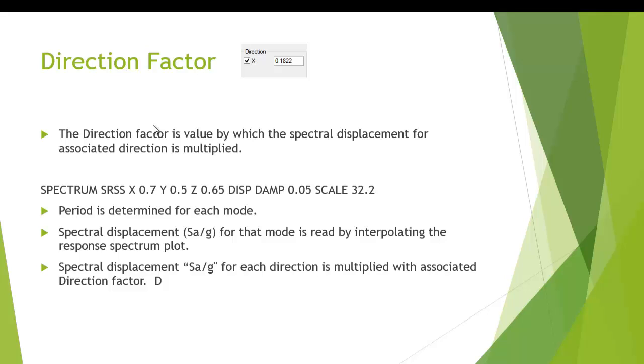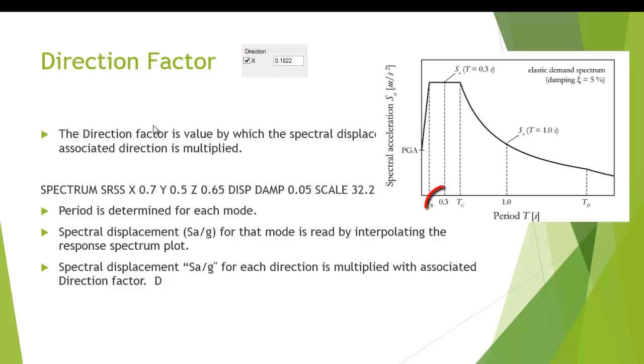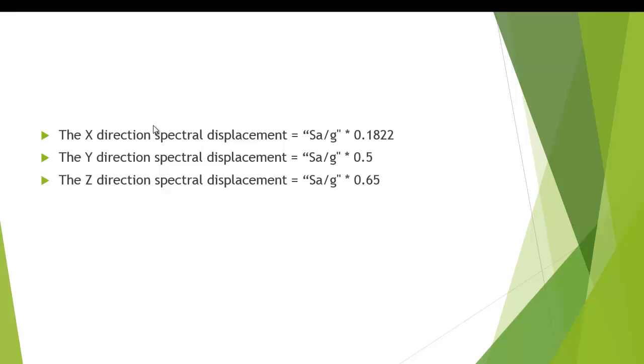The direction factor is the value by which the spectral displacement for the associated direction is multiplied. Suppose we are defining a spectrum command with SRSS combination with values in X, Y and Z direction as 0.7, 0.5, 0.65 as direction factors. First of all, what STAAD will do is that it will determine the period of the structure for each mode and then the spectral displacement SA by G for that mode is read from the response spectrum plot. And now the spectral displacement SA by G in that direction is multiplied with the associated direction factor that we have provided, that is D, which can be defined as X direction spectral displacement as SA by G into 0.188 in our present example.